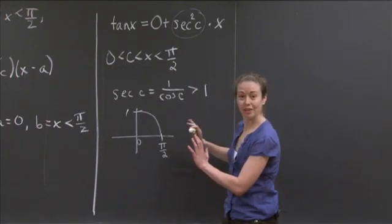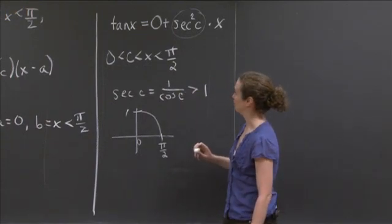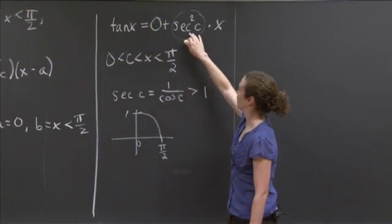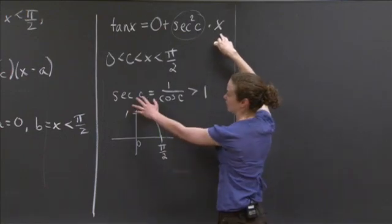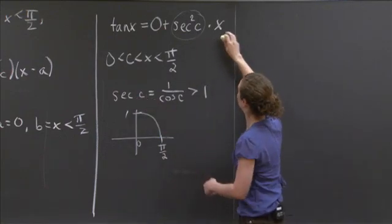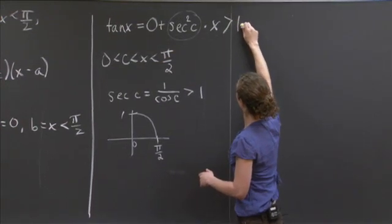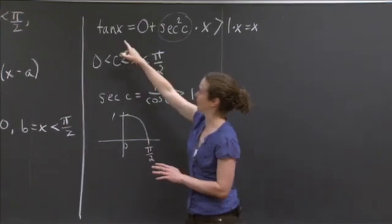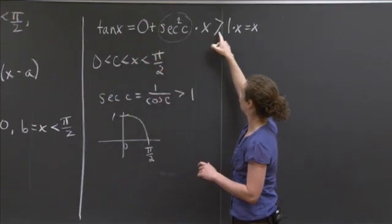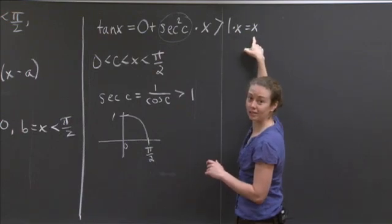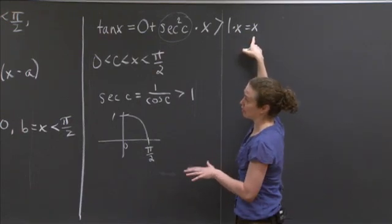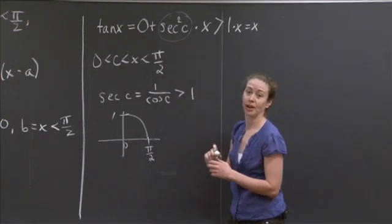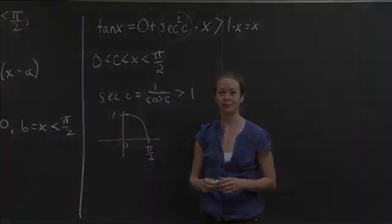Now I have the information I need to finish the problem. We have tan x = sec²c · x. Well, now I know sec c is bigger than 1. So this whole thing is bigger than 1 times x, which equals x. So on the left-hand side, we have tan x equals something which is bigger than x. We've just shown that for any value of x between 0 and π/2, tan x is bigger than x. And I think we'll stop there. See you later.